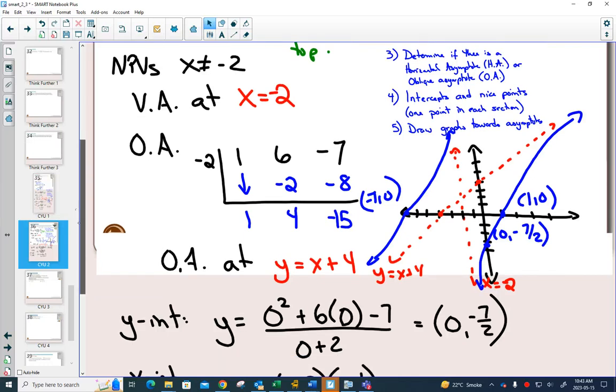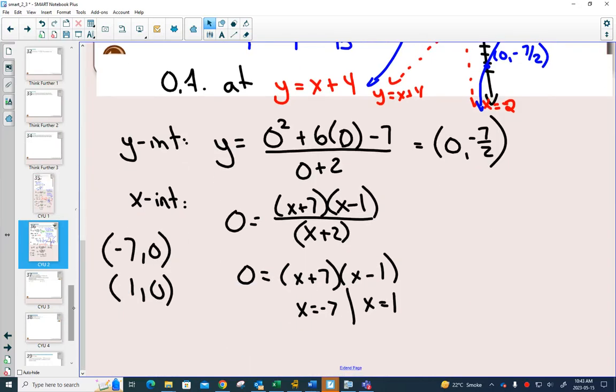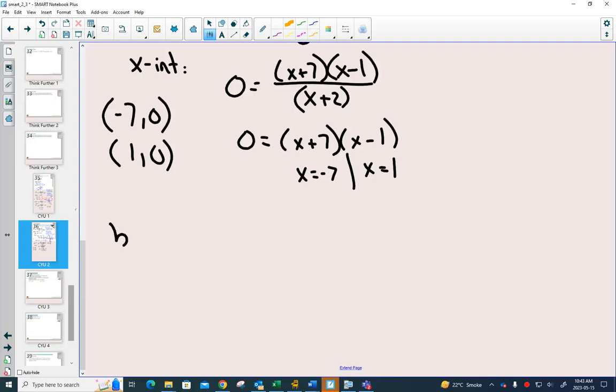Now we can look at part b. The equation of part b is exactly the same, except things have been flipped. So now the x plus 2 is on the top, and the x plus 7 and x minus 1 is on the bottom. And we go through these same steps.